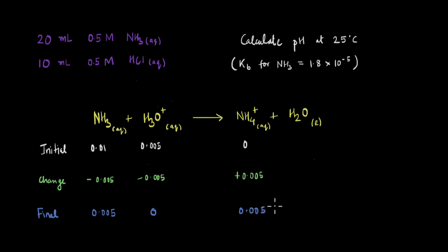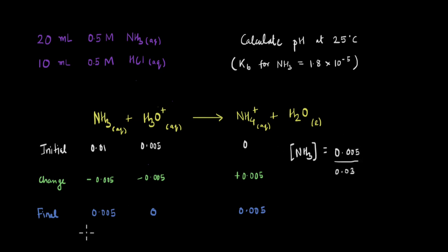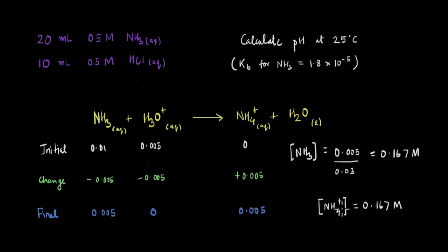After the reaction, we have 0.005 mol NH₃ and 0.005 mol NH₄⁺ remaining. To find the molar concentrations, we use molarity = moles/volume. The total volume is 20 + 10 = 30 mL = 0.03 L. So the molar concentration of NH₃ = 0.005/0.03 = 0.167 M, and because the numbers are the same, the molar concentration of NH₄⁺ is also 0.167 M.